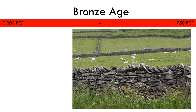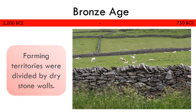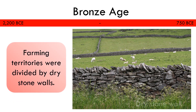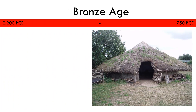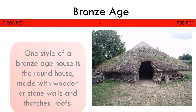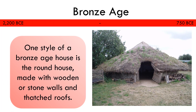An increase in production meant that some people owned large areas of farming land. Territories were divided by dry stone walls. One style of a Bronze Age house is a round house, made with wooden or stone walls and a thatched roof.